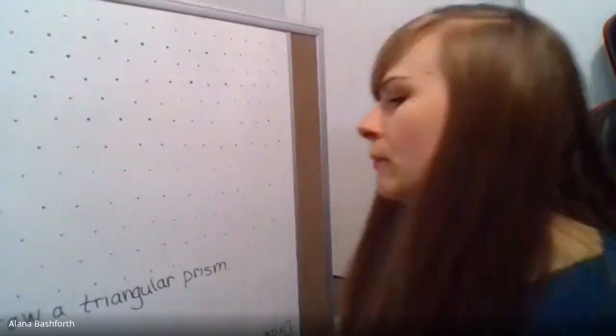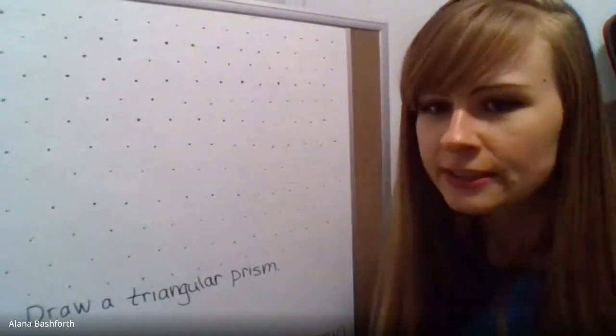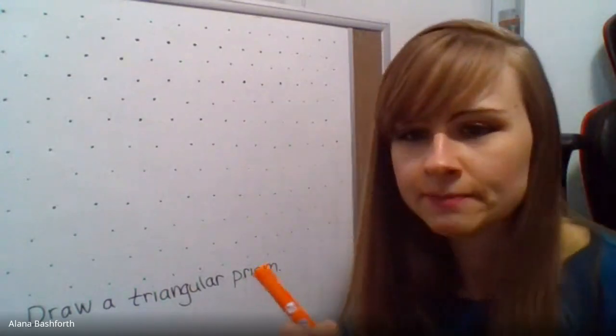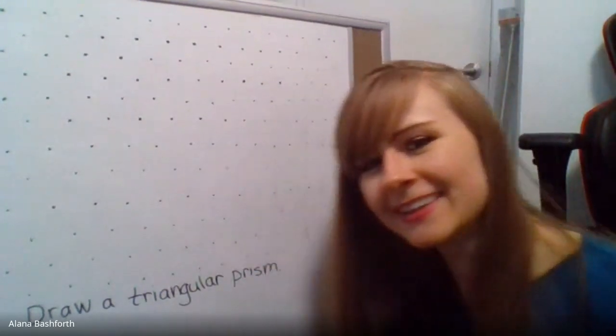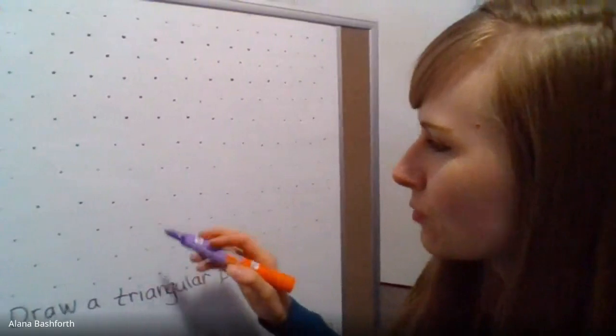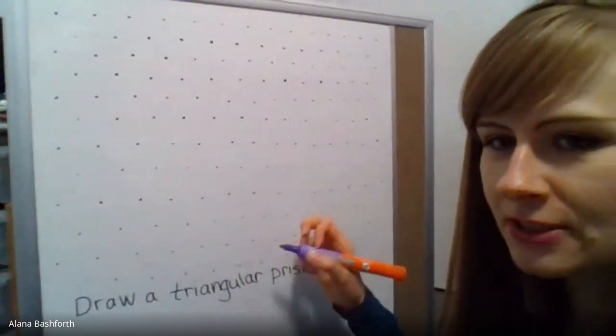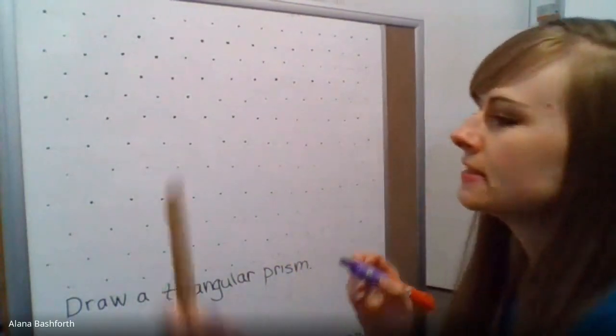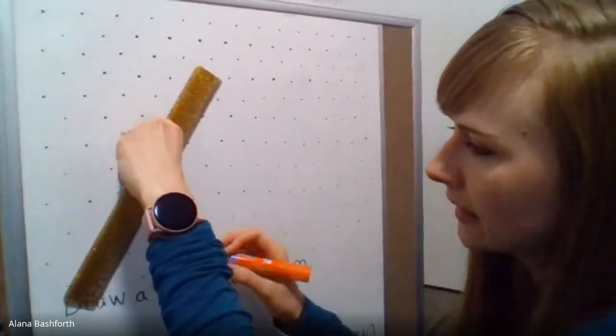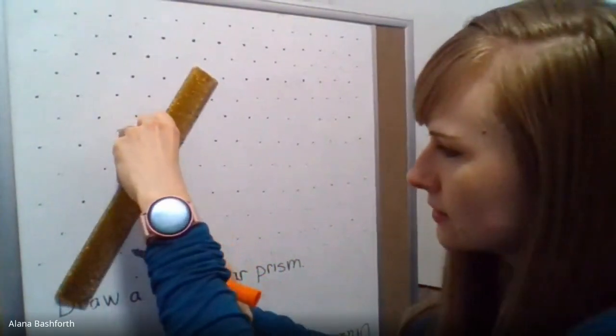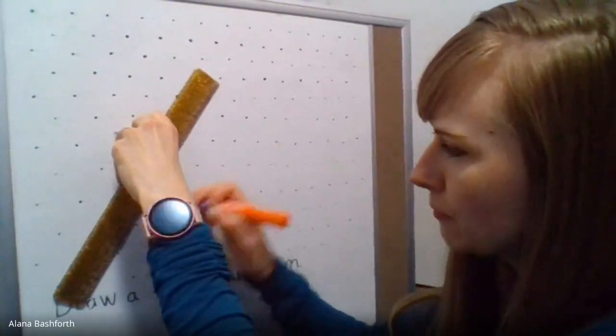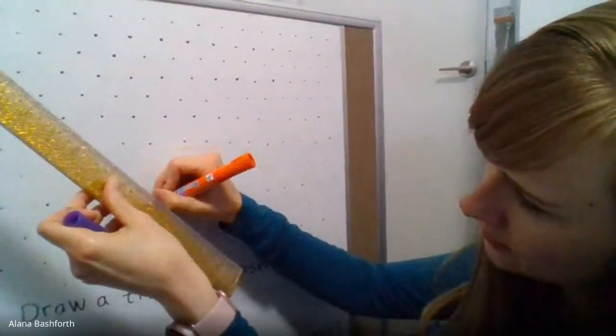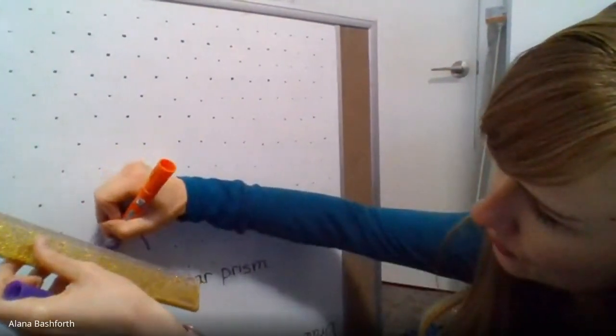Prisms have two bases and they connect with rectangles. So here we go. My ruler is right here, so I need to first make a triangle. I'm going to go two up, two down. It's not that easy to use a ruler with a whiteboard.